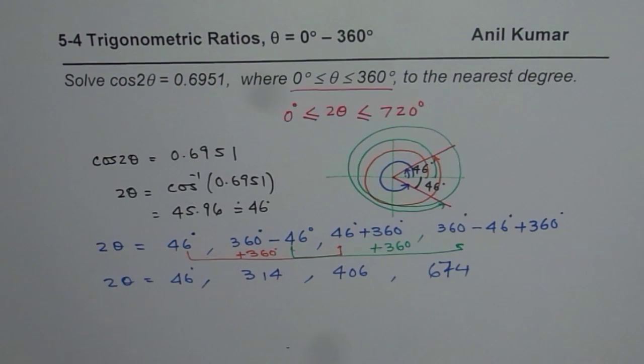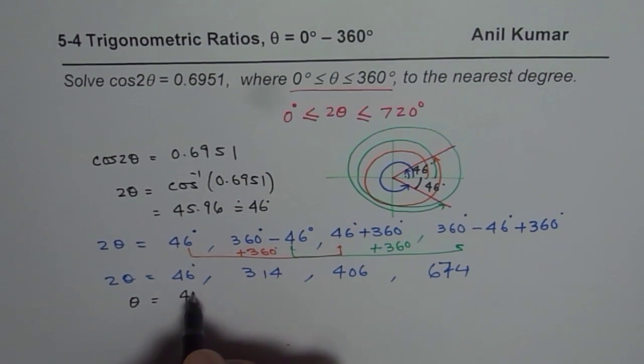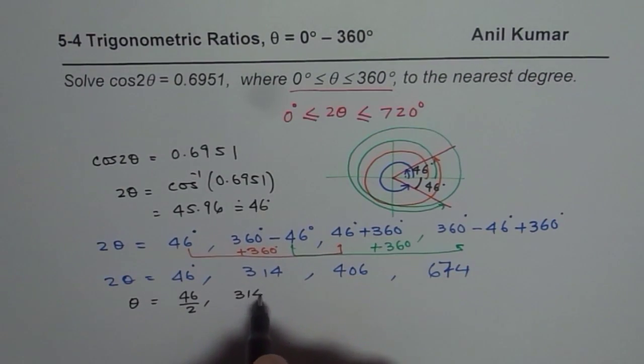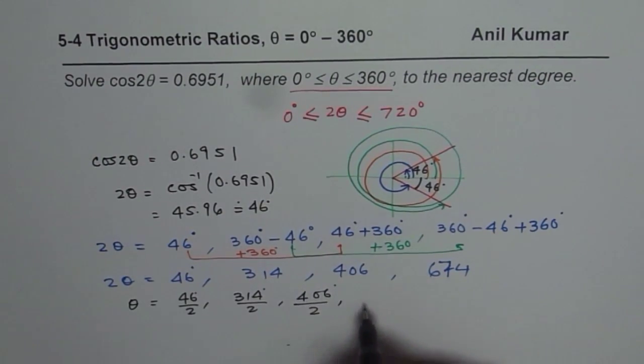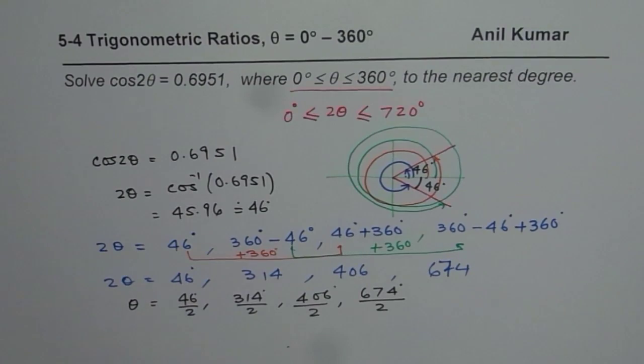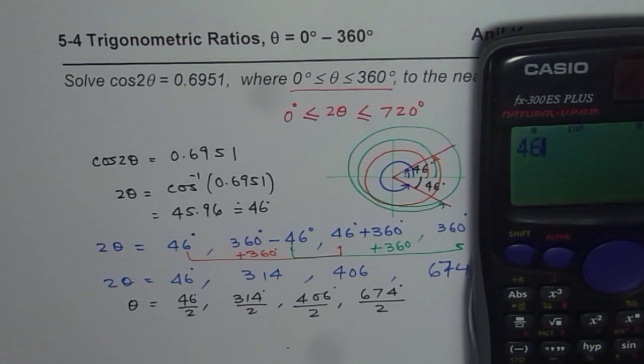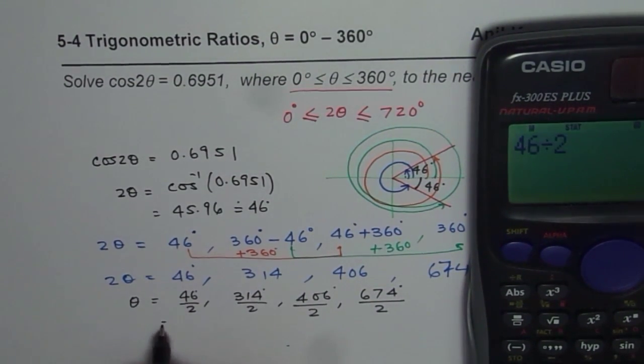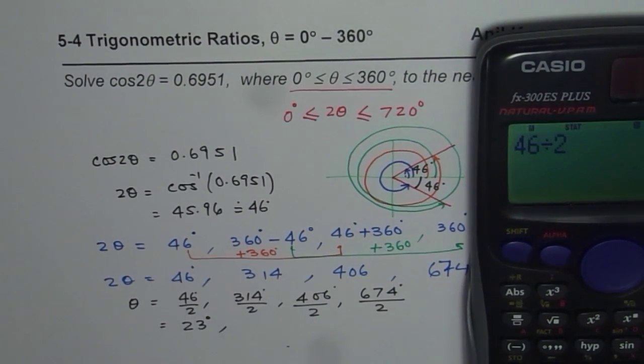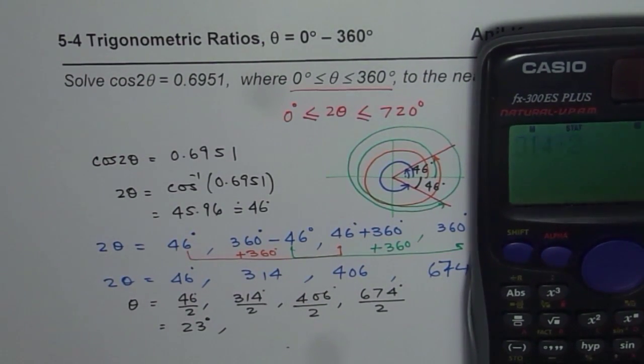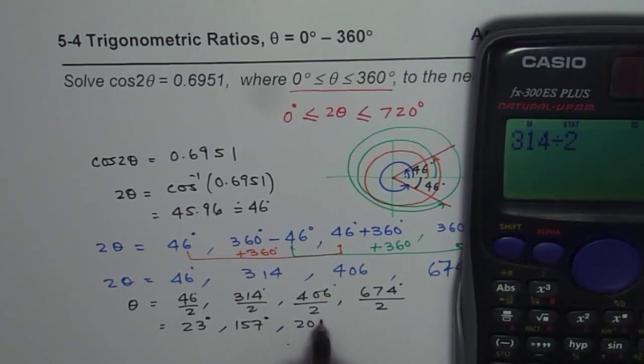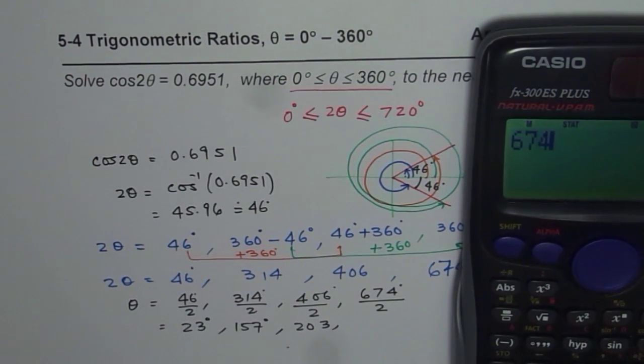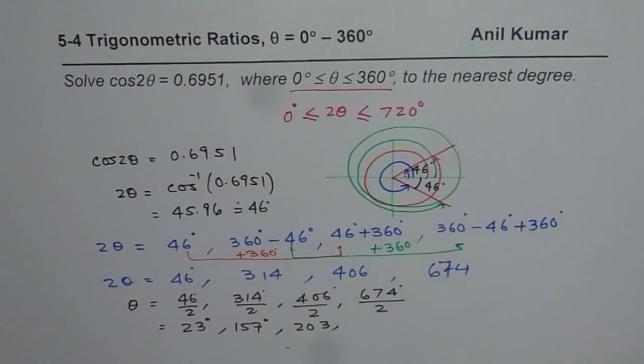So what is θ? θ will be equals to 46 divided by 2, 314 degrees divided by 2, 406 degrees divided by 2, and 674 degrees divided by 2. So when you divide, you can use calculator to find all these answers. 46 divided by 2 equals 23. 314 divided by 2 gives you 157. 406 divided by 2 is 203. And 674 divided by 2 gives you 337.